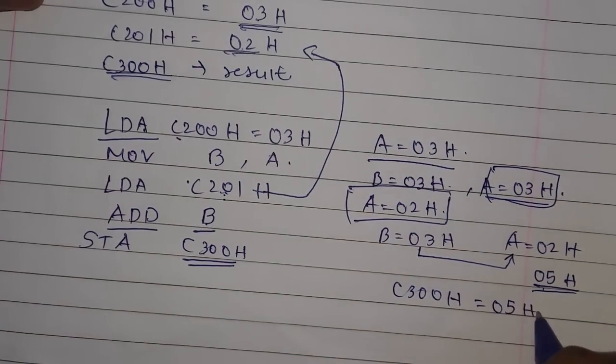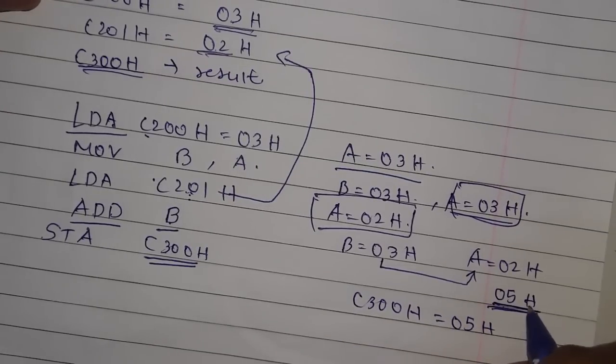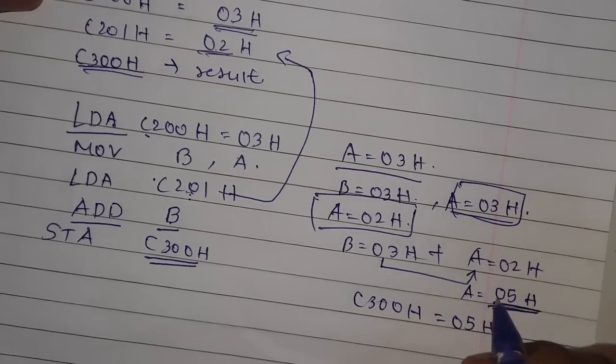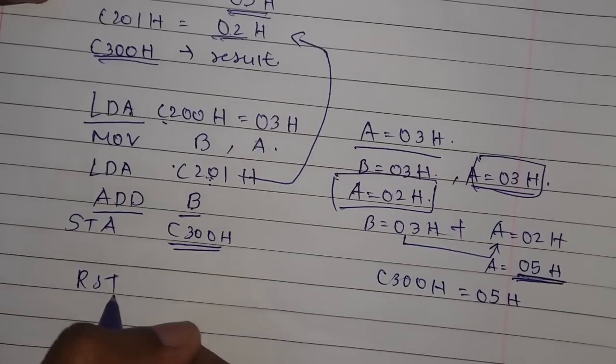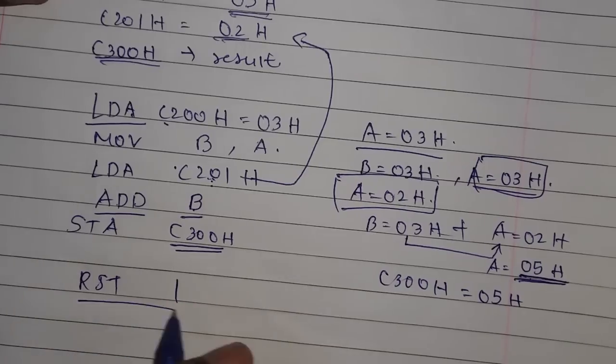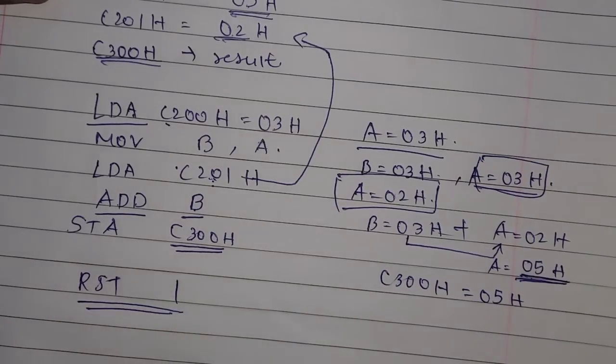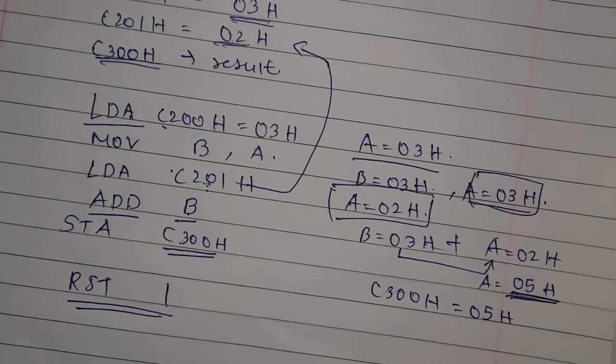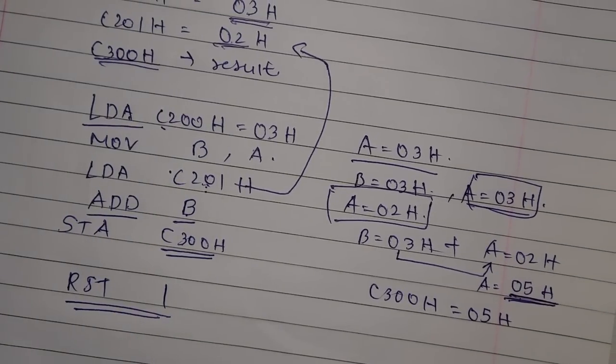Now this memory location C300H has the data 05H which was in the accumulator after we added these two. Now we have to stop the execution, so we do this instruction RST1.